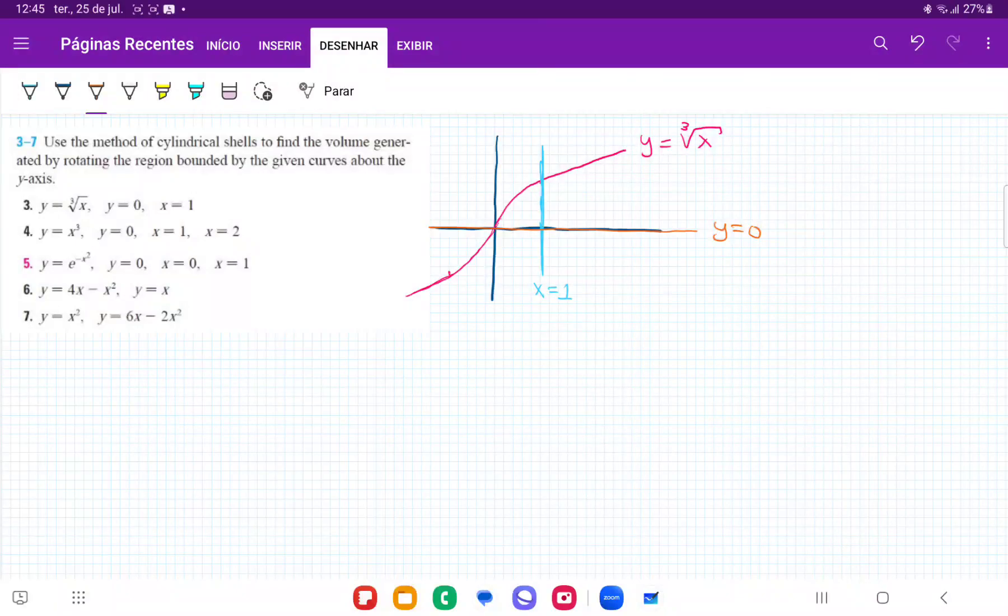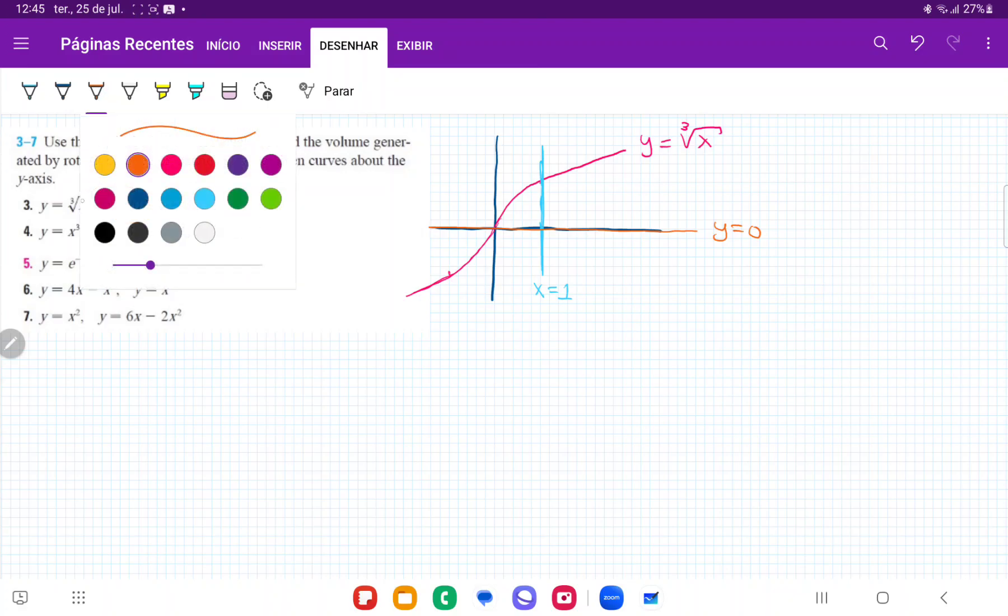So for number 3, they want us to take the area bounded between these curves and then rotate it about the y-axis. So I've gone ahead and drawn them. That's the cube root of x, which is y equals 0, which is the orange line. Then we have the cube root of x, which is in pink. And lastly, x is equal to 1, which is in light blue.